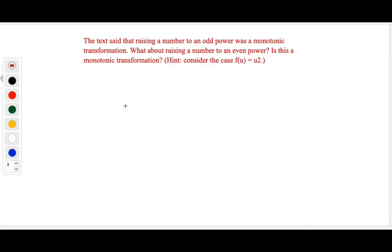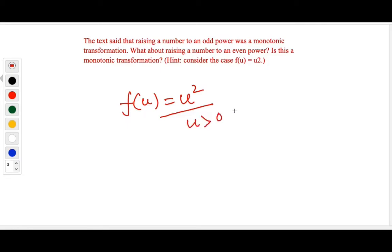The first question: the text said that raising a number to an odd power was a monotonic transformation. What about raising a number to an even power? Consider the case where f(u) = u². This is a monotonic transformation when u is positive. However, when u is negative, this is not the case. Trivially, u = 0 does not make sense because you are not changing the number in any meaningful way.